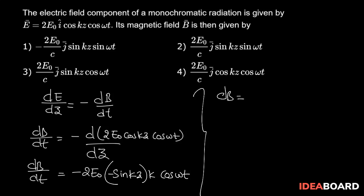Next I can write dB = 2E₀k sin kz cos ωt dt. If we integrate on both sides...